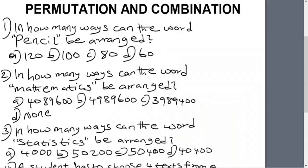In this video, we are going to learn how to solve problems involving permutation and combination in a scientific calculator, especially with the Casio FX-CG50 graphical calculator. After going through this video, I guarantee you that you will be able to solve these problems in seconds for multiple choice questions. So ensure you stay with me to the very end of this video because we are going to learn a lot.